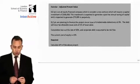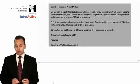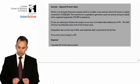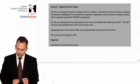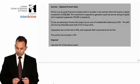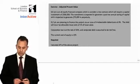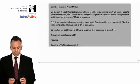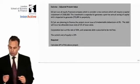EJZ PLC is an all-equity finance company considering a new venture requiring a capital investment of $500,000. The investment is expected to generate a post-tax annual saving of $70,000 in perpetuity. EJZ PLC plans to finance the project via an issue of irredeemable debentures at 8%. The debt will incur tax-allowable issue costs of 2% of issue value. Corporation tax is 30%, corporate debt is assumed to be risk-free, and the current cost of equity is 15%. Calculate the APV of the project.